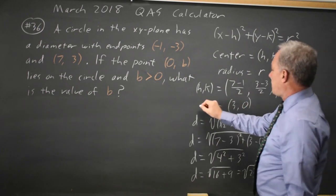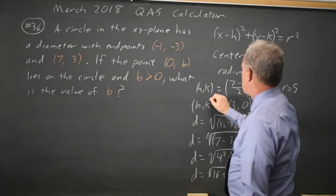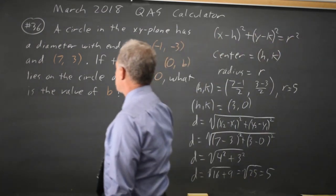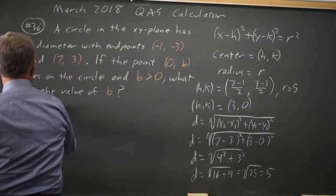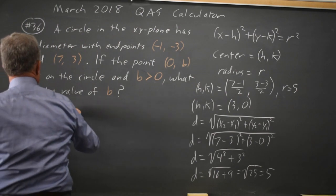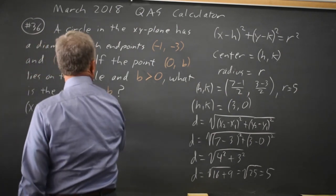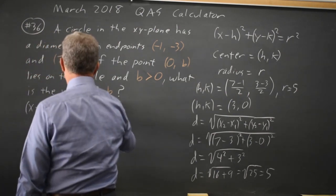Substituting hk here and r into the equation for the circle gives me x minus 3 squared plus y minus 0 squared, which is just y squared, equals r squared is 5 squared.